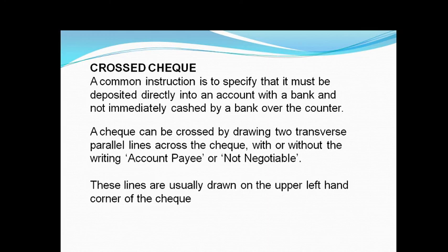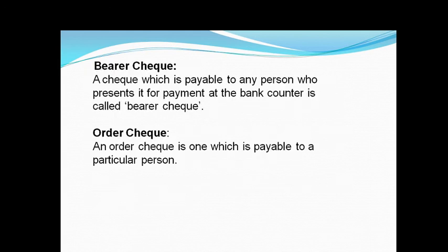A cheque can be crossed by drawing two transverse parallel lines across it, with or without writing 'account payee' or 'not negotiable.' These two parallel lines are drawn on the upper left-hand corner of the cheque, and then it is called a crossed cheque.